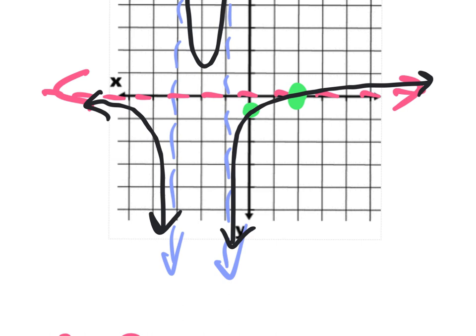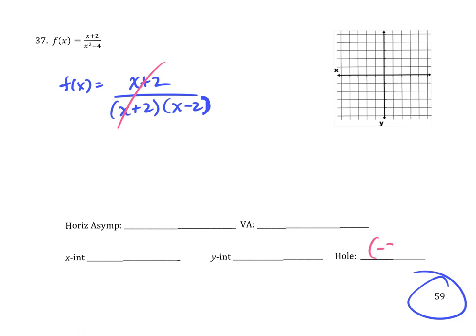We're jumping to page 59. You ready? First thing first, we're always going to go factor them. What is this function factoring into on the top? Page 59. Nothing on the top. Agreed. On the bottom, difference of squares. What are we left with? x plus 2, x minus 2. Do we have a hole? Yes. Where, what x-coordinate is that hole going to be at? At negative 2. Before we go any further, rewrite what is left, which is 1 over x minus 2.